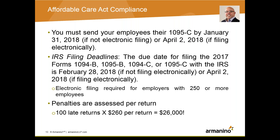The IRS filing deadline for the 2017 forms — 1094-B, 1095-B, 1094-C, or 1095-C — is February 28th if not filing electronically, or April 2nd, 2018 if filing electronically. Penalties can add up quickly: if you are late, it's $260 per return, and $100 per return adds up to a whopping $26,000. Please be mindful of these deadlines.